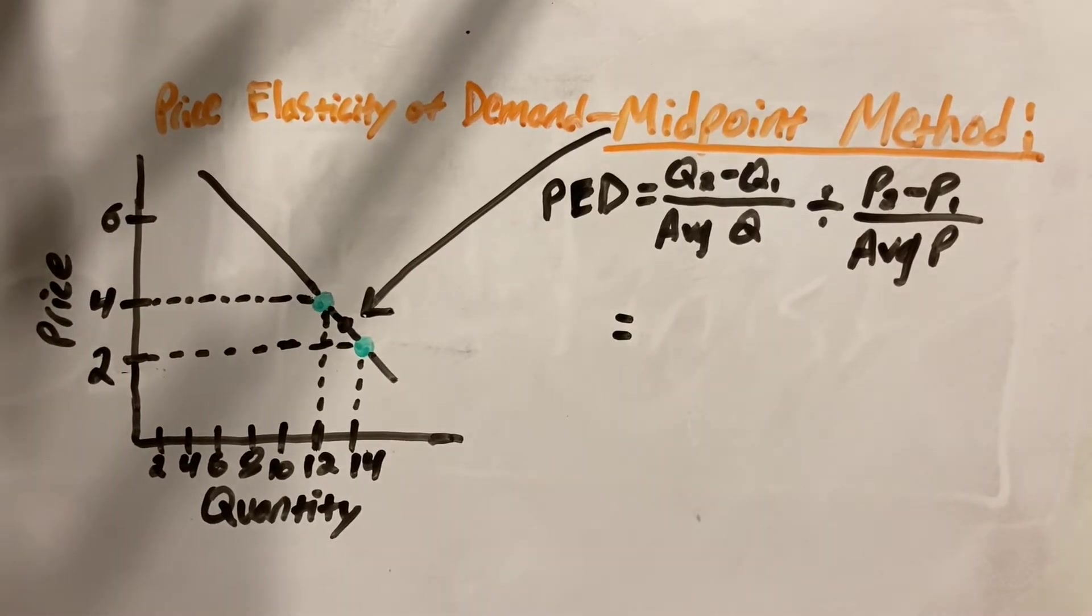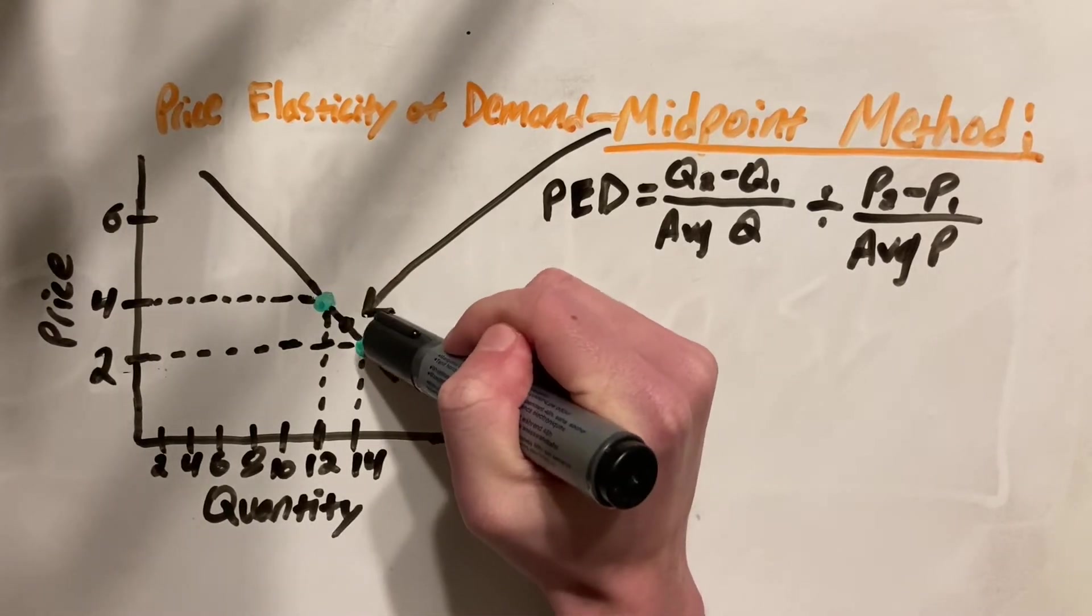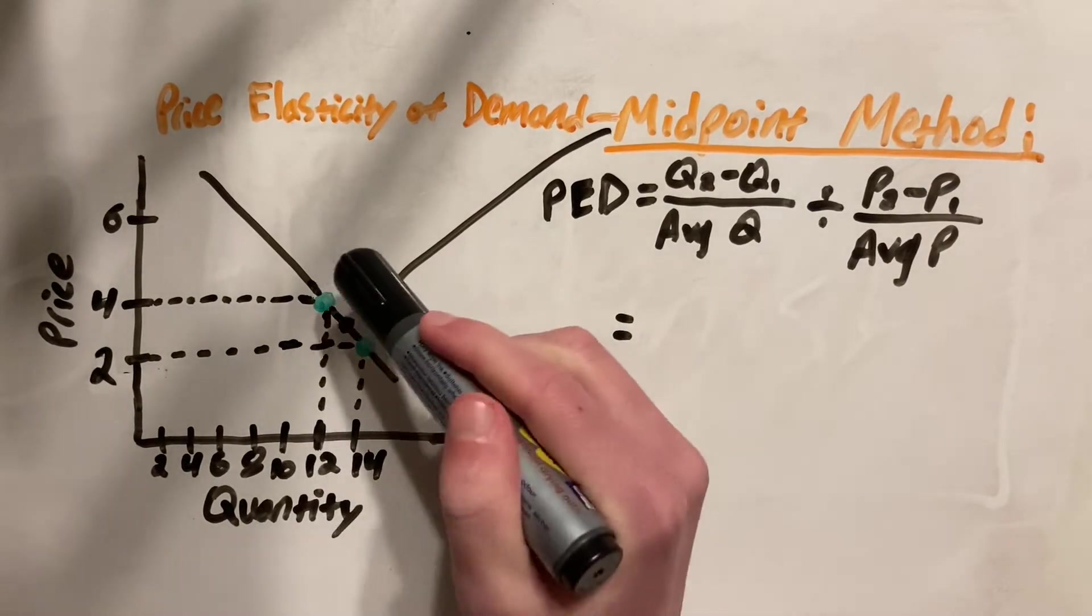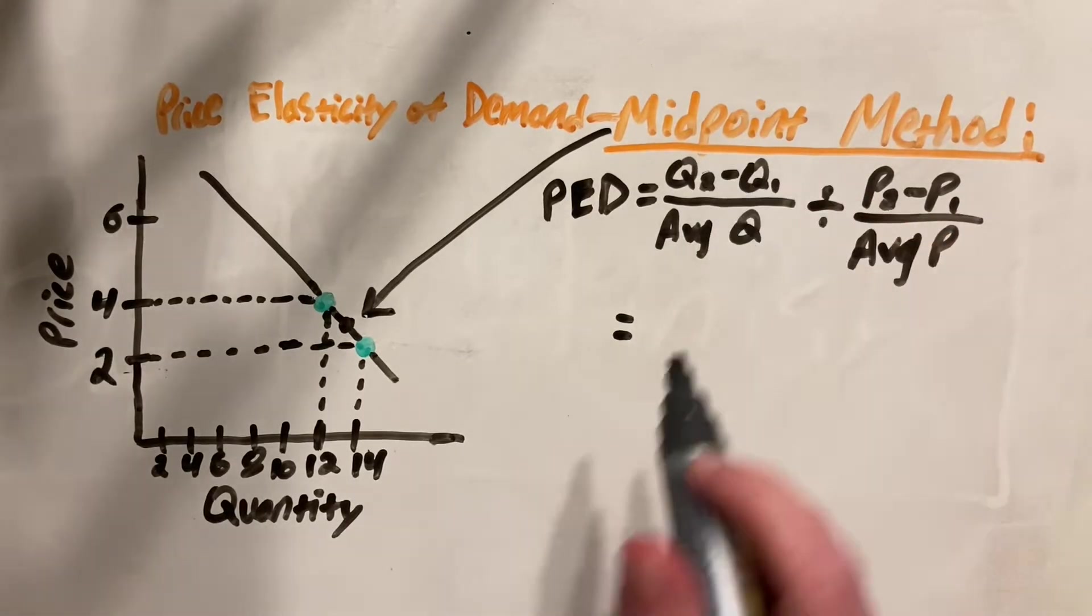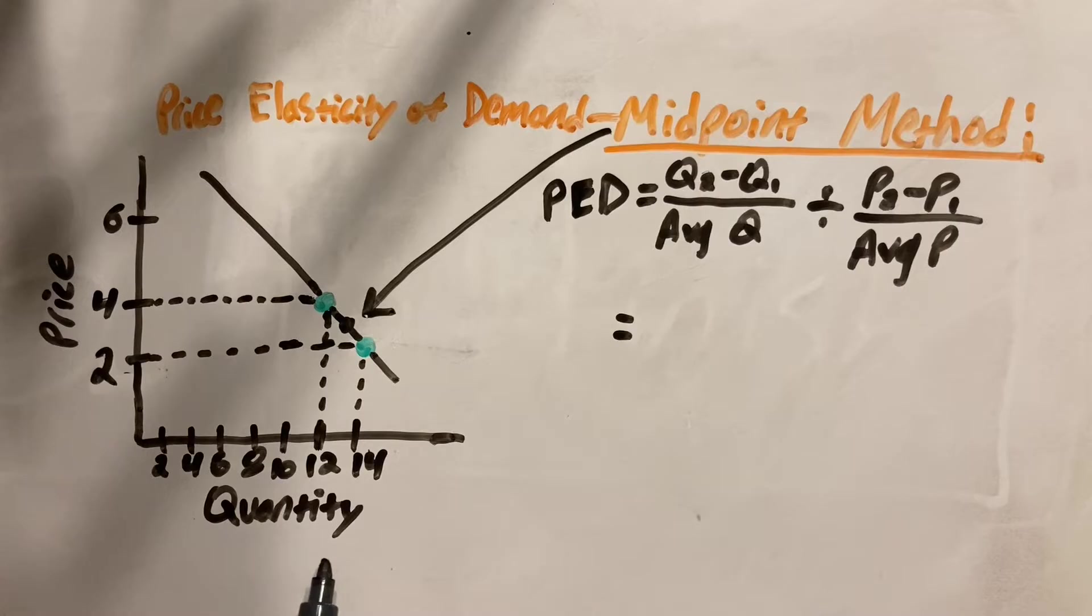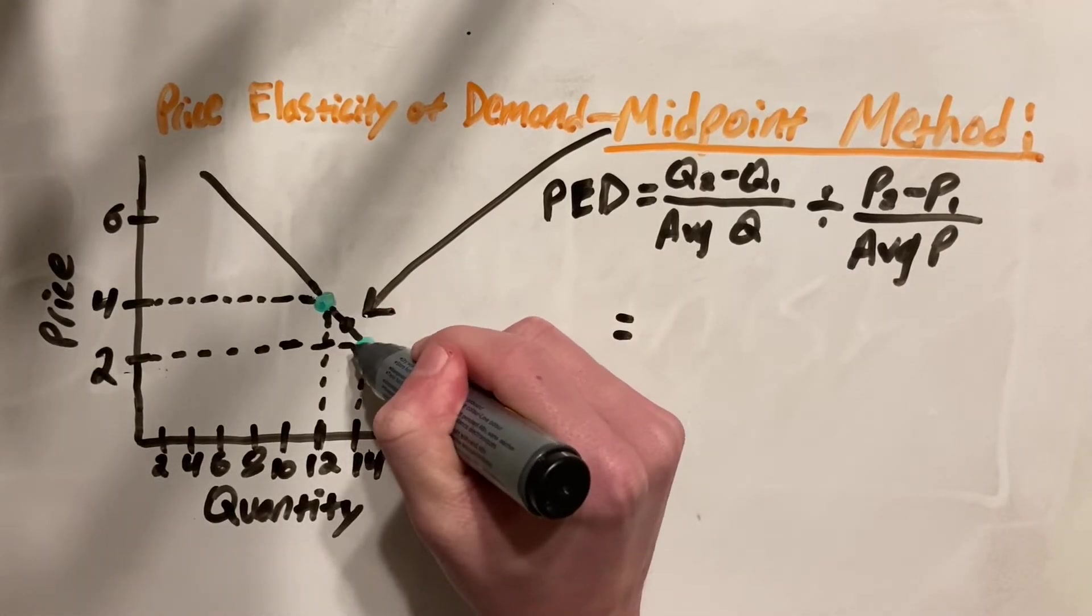And if you're wondering what the Q2 and the Q1 are, that's just quantity point 2 and quantity point 1. In this example, say Q2 is here and Q1 is here. Q1 is the first quantity and Q2 is the second quantity. Then when we move on to solving this problem, we simply substitute these values into this formula.